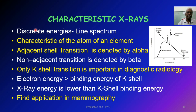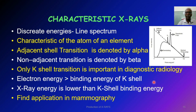Characteristic X-rays consist of discrete energies, usually called a line spectrum — it is characteristic of the atom of the element. Characteristic X-rays from adjacent shell transitions are denoted as alpha characteristic X-rays. If from non-adjacent transitions, they are called beta rays. In medicine, only K-shell transitions are very important, especially in diagnostic radiology. The conditions for characteristic X-rays are: the electron energy must be greater than the binding energy. The X-ray energy is lower than the K-shell binding energy, and this finds application in mammography.